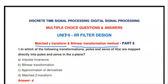Welcome to my channel. Today we are going to discuss objective type questions and answers from the topic of matched Z-transform and bilinear transformation method. These two methods are used to design the IIR digital filter. We previously discussed two other methods to convert the analog IIR filter into a digital filter: approximation of derivatives and the impulse invariant method.